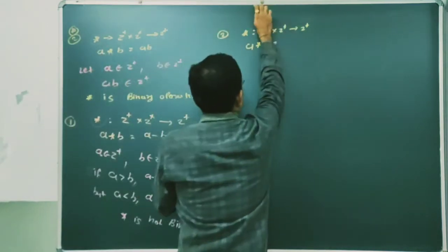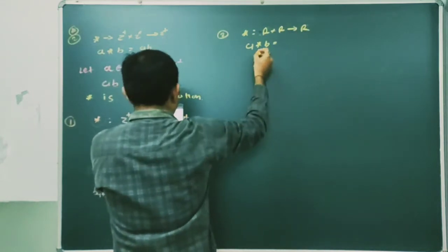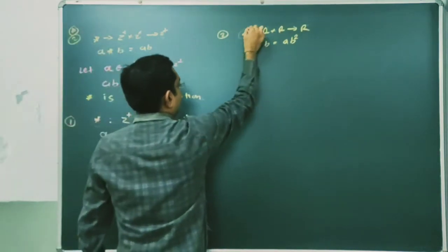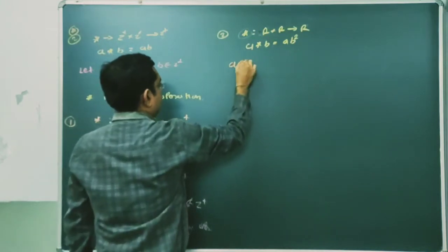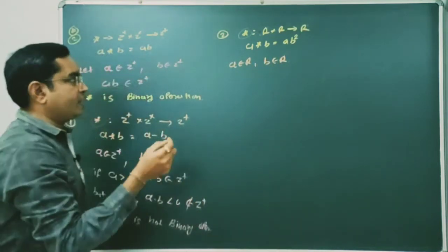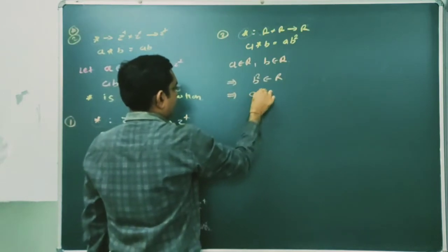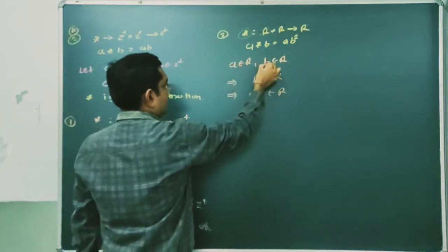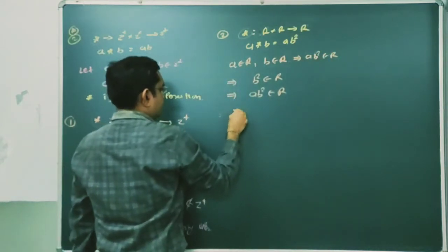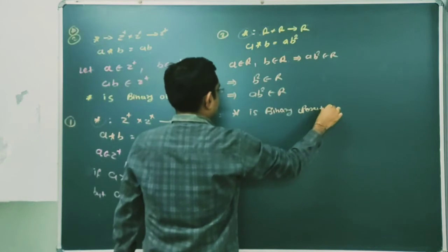Third question: a binary operation star on R is given, so this is R × R → R. The binary operation star is defined as a★b = ab². We have to check whether this binary operation is a binary operation or not. Here a ∈ R and b ∈ R, so b² is also a real number, and multiplying any real number by b² gives a real number. Therefore a★b = ab² ∈ R, and hence the binary operation star is a binary operation.